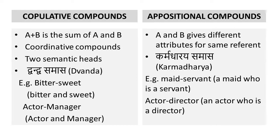Another distinction is made between copulative compounds and appositional compounds. Copulative means co-ordinative — the compound AB is the sum of A and B. Since there is no modifier, there are two semantic heads present in copulative compounds. In Sanskrit this is known as dvandva samas. For example, 'bitter-sweet' is the copulation of 'bitter' and 'sweet'. Similarly, 'actor-manager' works the same way.